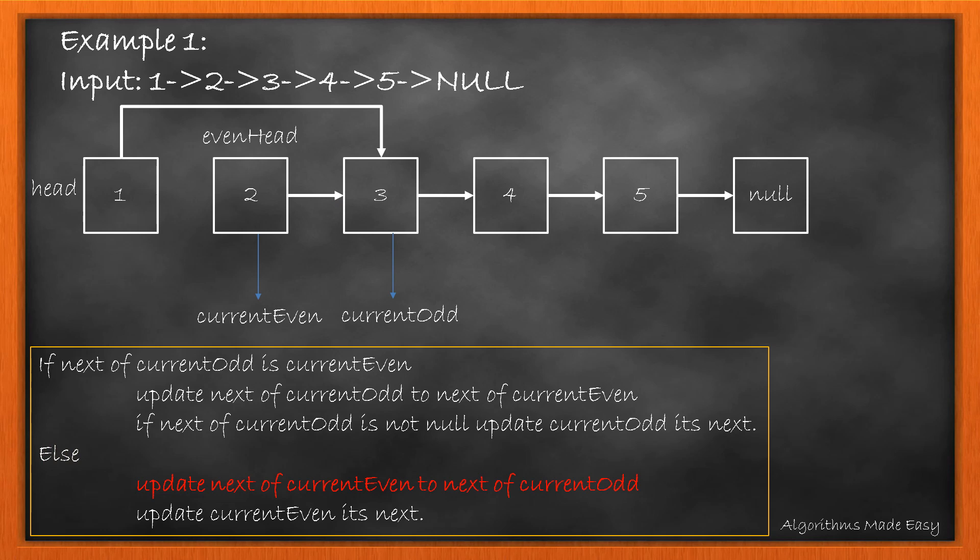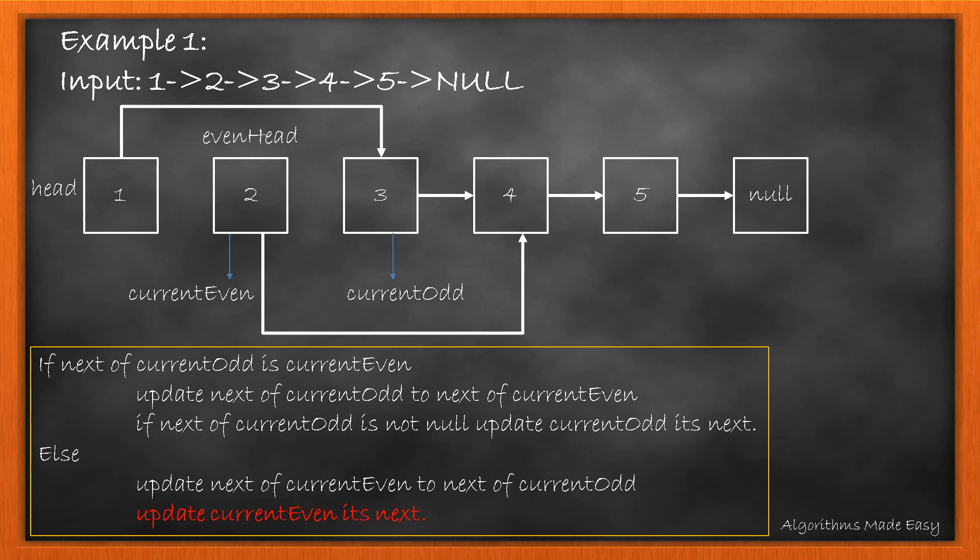We will update next of currentEven with next of currentOdd. Then we update currentEven to its new next. This completes our second iteration.